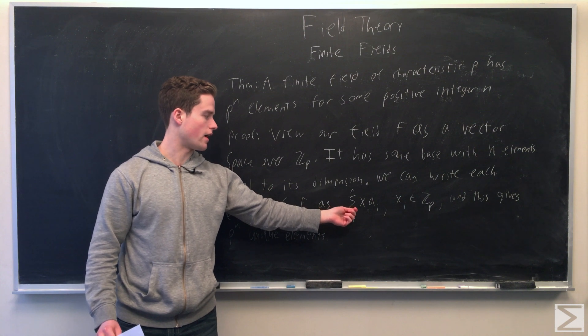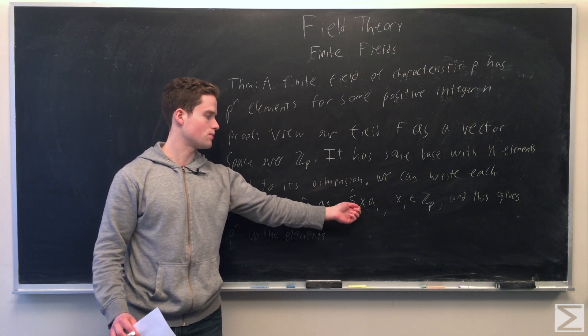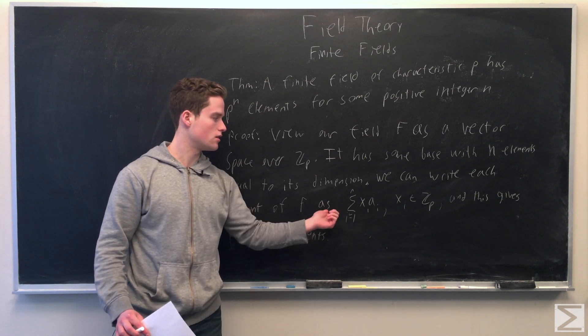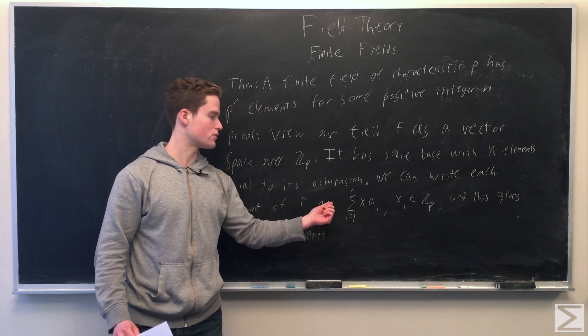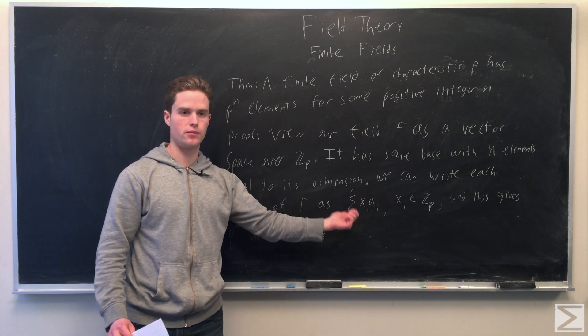We can set each xi equals to some element 0 to p minus 1 elements, p different elements. And we have n different xi to pick from. Each one for one element of the base. So each one for one ai. But this is just p to the n elements.